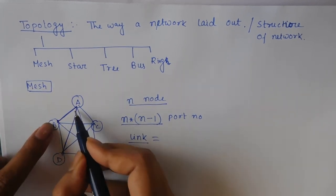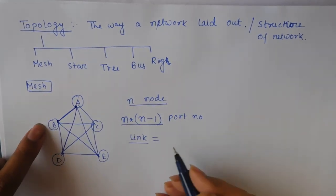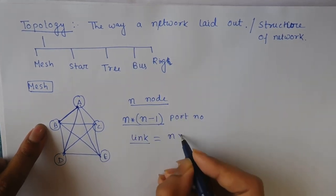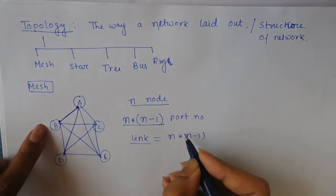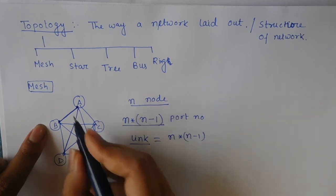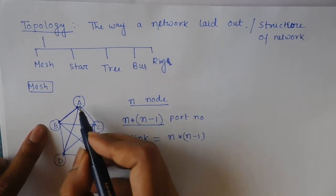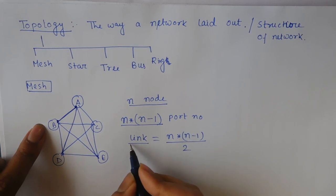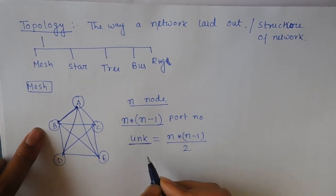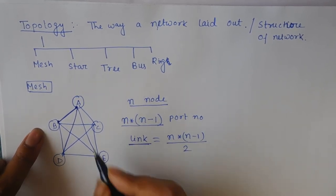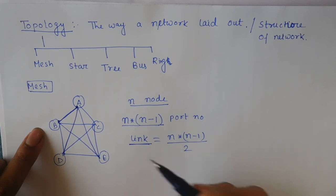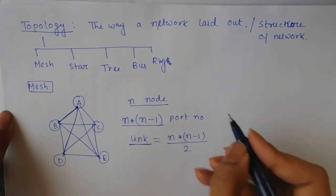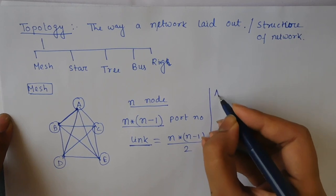A link shares two ports, so the total number of links is N×(N-1) divided by 2. This is also the formula of the connected graph. These are the advantages of mesh topology.